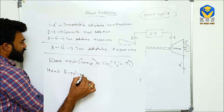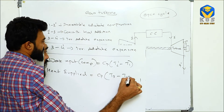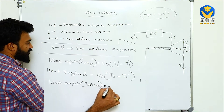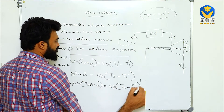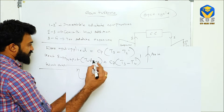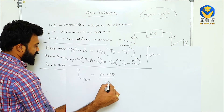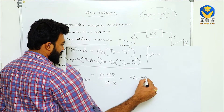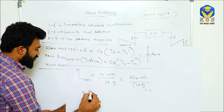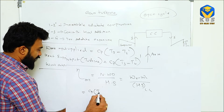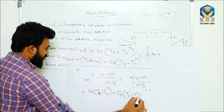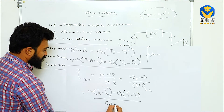Heat supplied equals Cp into (T3 minus T2'). Work output inside the turbine equals Cp into (T3 minus T4') — high temperature minus low temperature. From here we can calculate the efficiency of the gas turbine: net work done divided by heat supplied. Net work done equals work done by turbine minus work done by compressor, divided by heat supplied inside the combustion chamber, which gives Cp(T3 - T4') minus Cp(T2' - T1), all divided by Cp(T3 - T2').